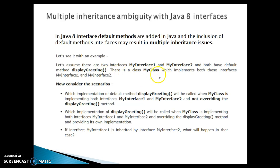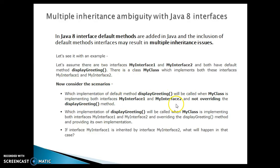There is a class called my class which implements both of these interfaces, my interface one and my interface two. Now we need to look into a few scenarios — like which implementation of the default method display greeting will be called when my class is implementing both interfaces and not overriding the display greeting method.